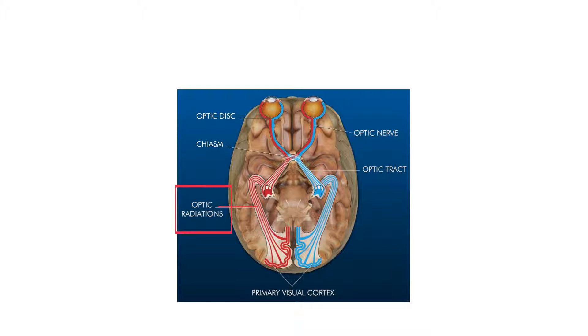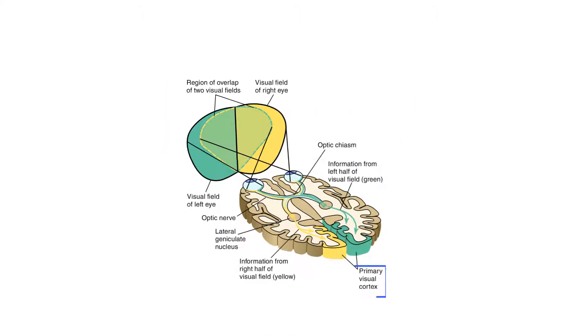Posterior to the lateral geniculate nucleus, the fibers fan out and are called optic radiations. The optic radiations synapse in primary visual cortex in the occipital lobe.